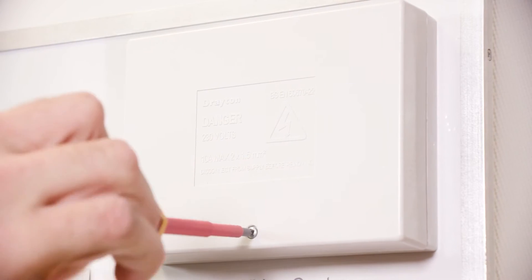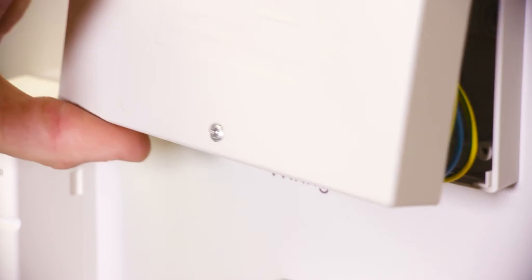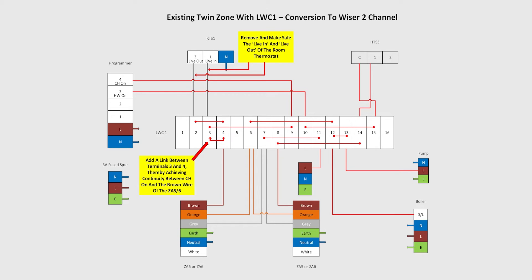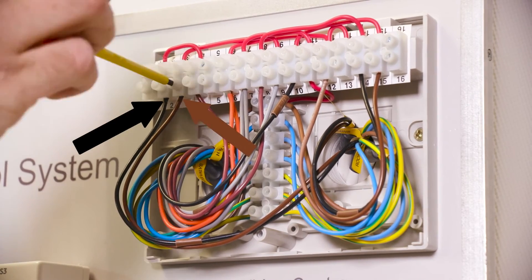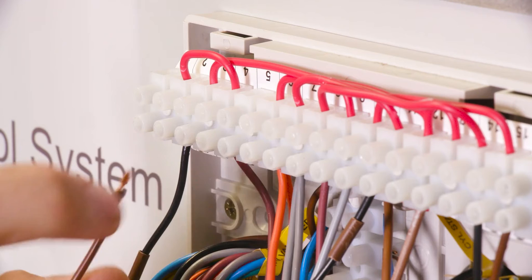Next, you need to remove the existing wired thermostat from the system. Firstly, disconnect it in the wiring center by identifying the two thermostat wires and disconnecting them.